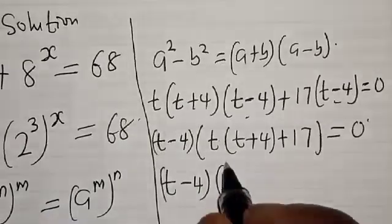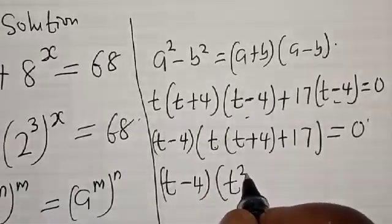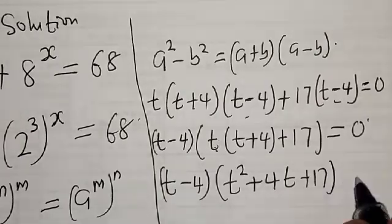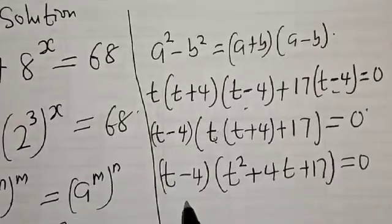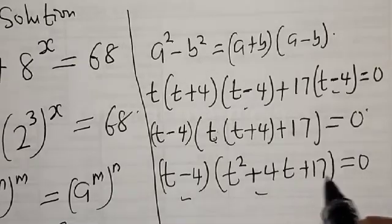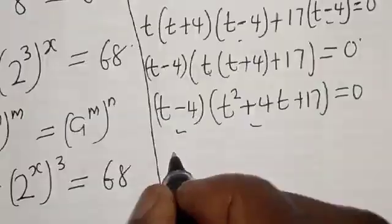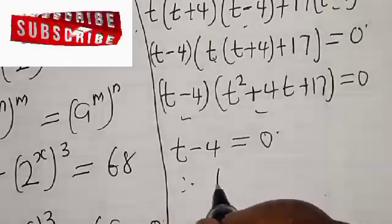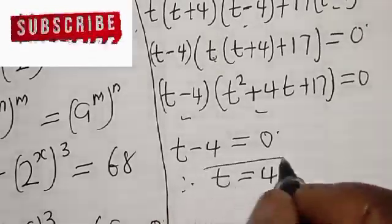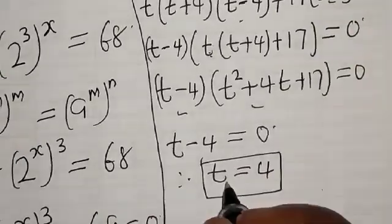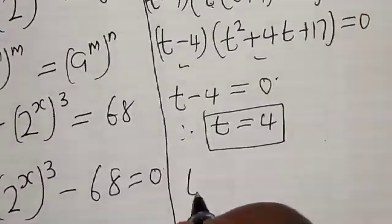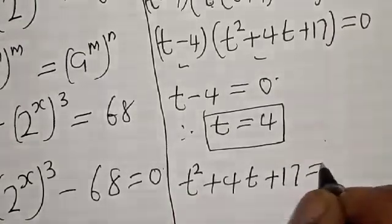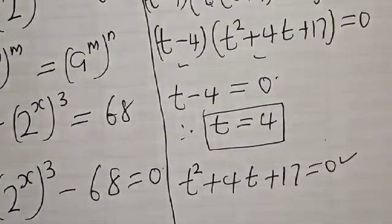So we have t minus 4 into t squared plus 4t plus 17 is equal to zero. We now have two cases: the first is t minus 4 equals zero, giving t equals 4. The second case is t squared plus 4t plus 17 equals zero, which is a quadratic equation. Let's solve using the quadratic formula.